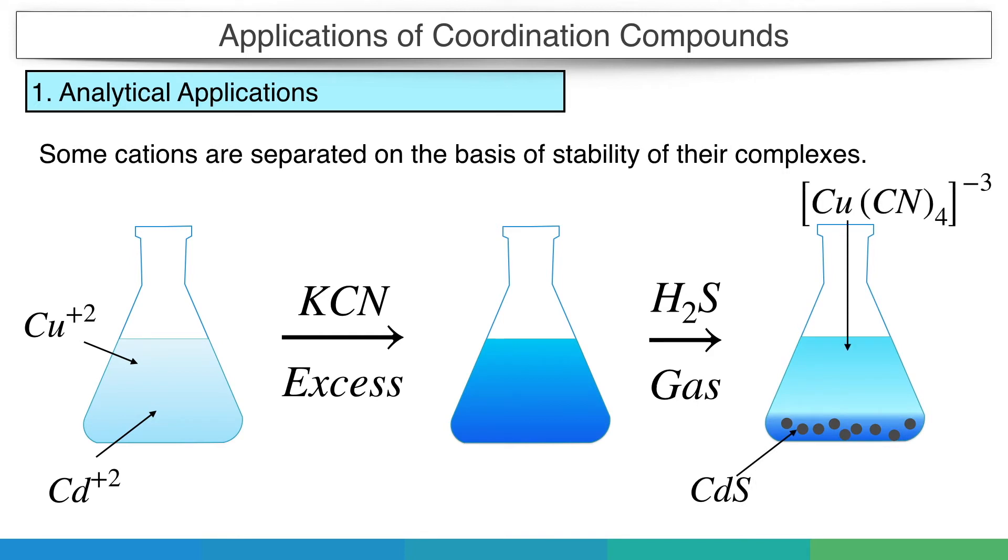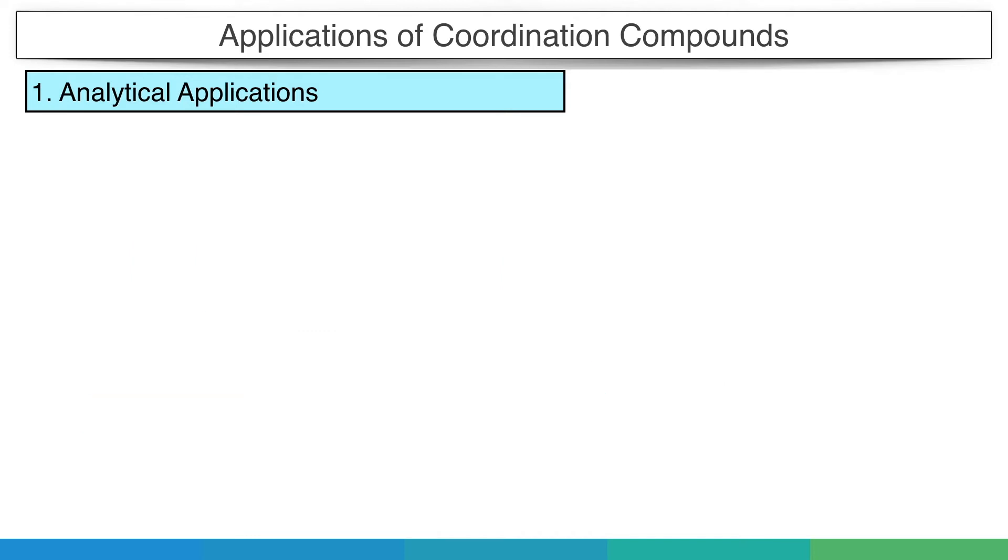As most complexes are highly colored, many organic chelating agents are used in colorimetry, where we detect the color of the solution.